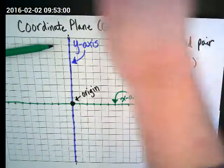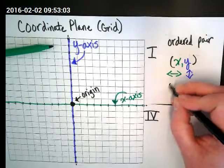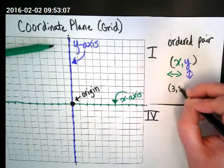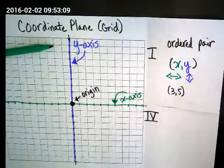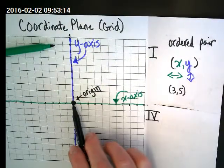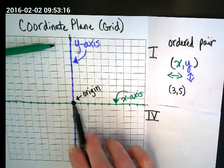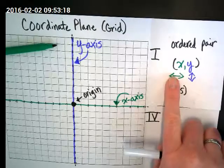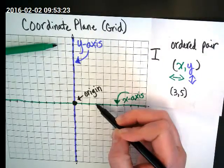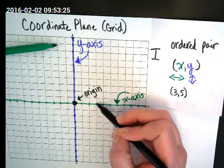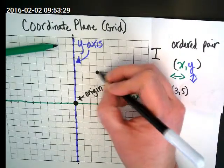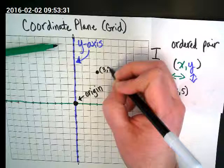Okay. So I'm going to give you guys some ordered pairs, and we're going to graph a few. The first pair I would like to see you graph is three comma five. Again, we always start at the origin, and we do the first number going left or right. In which direction are we going for three? Over to the right, and then the five goes up. One, two, three, four, five, right here, and let's label that as three comma five.